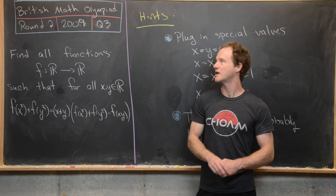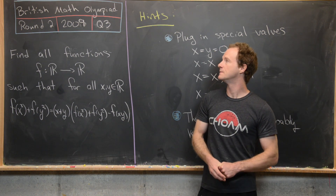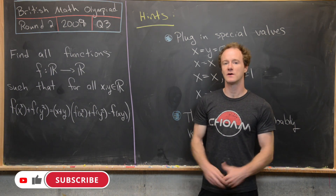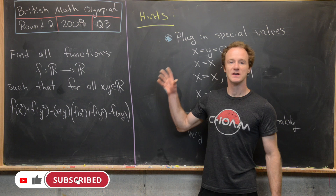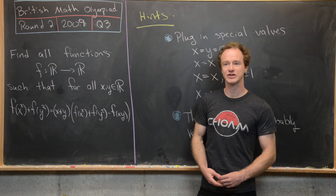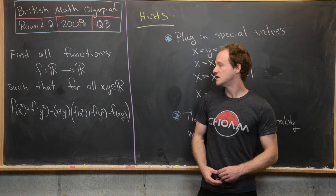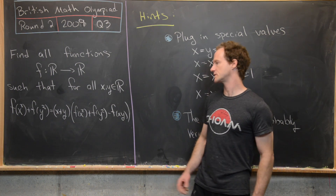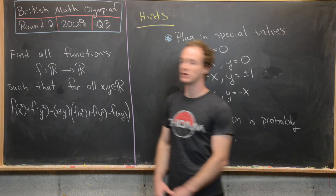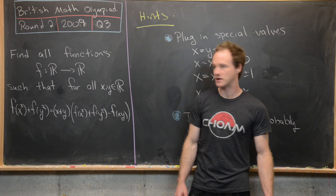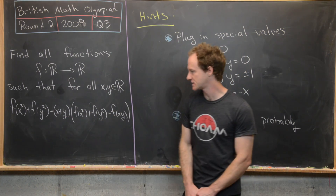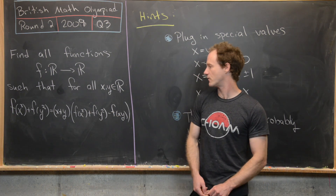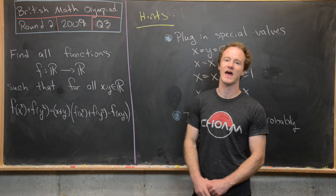Here we're going to look at a nice problem from the 2009 British Math Olympiad. This is from round two, question three, and it involves a functional equation. Our goal is to find all functions f from ℝ to ℝ such that for all x and y in the real numbers, we have f(x³) + f(y³) = (x + y)(f(x²) + f(y²) - f(xy)).